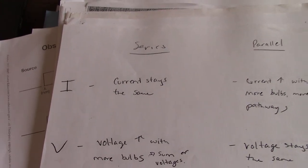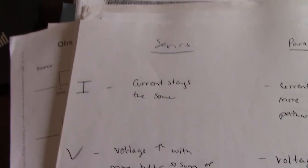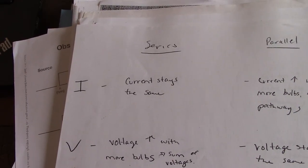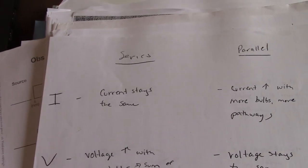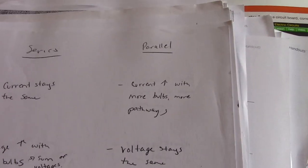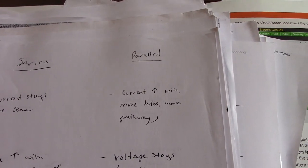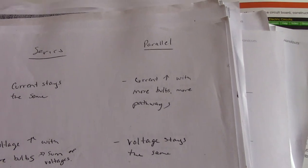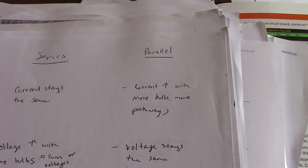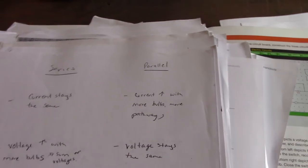Add this to your data booklet. When we look at current — because there's only one pathway — as we add resistors, current doesn't change in a series circuit. The same current has to be provided for more resistors. In parallel, as we increase the amount of resistors, another pathway is added, so current increases as more bulbs are added because there's more space for electrons to flow.